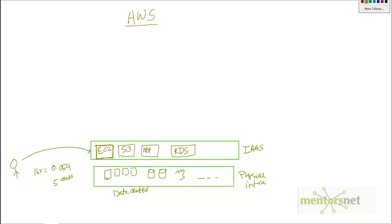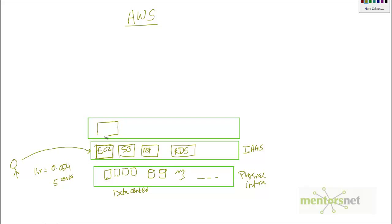On top of Infrastructure as a Service, Amazon also provides additional services. For example, if your application needs to send emails to 1,000 people, instead of maintaining your own messaging server you can use Amazon Simple Email Service. If you want to charge money for your service, you can use Amazon Payment Services. And if you want to deliver high-quality video content to different locations around the world, you can configure Amazon CloudFront to cache your videos at different geographical locations.